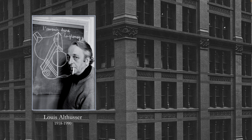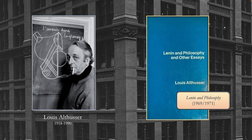This is Louis Althusser. He was a French philosopher, pretty controversial because he murdered his wife in 1980, strangled her to death, and pled insanity and won that case, then continued to live another 10 years as a public intellectual in Paris. He did a lot of work on Marxism. The work he's best known for in America is his book Lenin and Philosophy, originally published in 1969 and then translated in 1971.